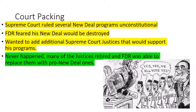Some of FDR's programs were quite controversial, and the Supreme Court started ruling them unconstitutional, such as the Agricultural Adjustment Act. FDR feared his New Deal would be destroyed, so he devised a plan to add additional Supreme Court justices who would be loyal to him and vote to uphold his programs. This was incredibly unpopular and didn't happen — it's considered one of FDR's great blunders. Fortunately for FDR, many of the opposing justices were old and retired, allowing him to replace them with pro-New Deal justices.